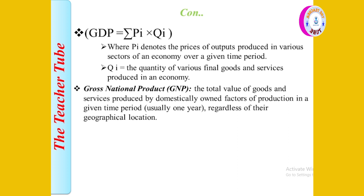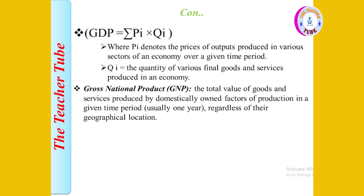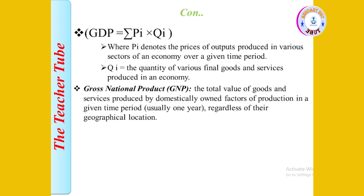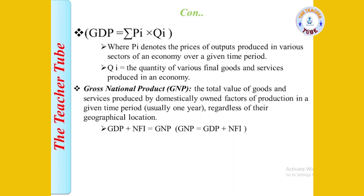The next concept is gross national product (GNP). GNP is the total value of goods and services produced by domestically owned factors of production in a given time period, usually one year, regardless of geographical location. The formula is: GNP = GDP + Net Factor Income (NFI).